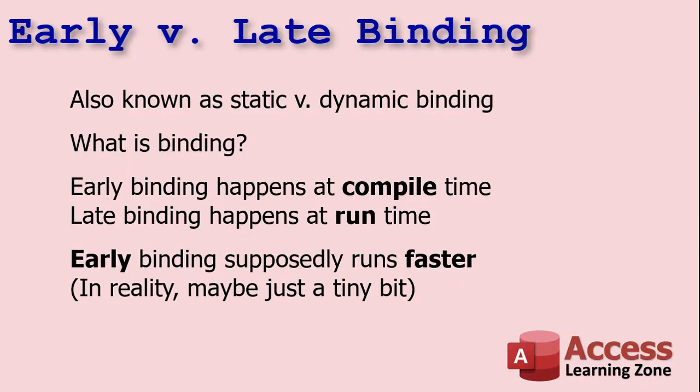Let's talk a little bit about early versus late binding — it's also called static or dynamic binding. Binding is basically matching the function calls that you're going to use with the actual code that's written by the programmer at Microsoft. For example, a mail item has objects for sending the mail, specifying the recipient, specifying the body and the subject. You have to match up your calls in your VBA with what the object library is expecting.